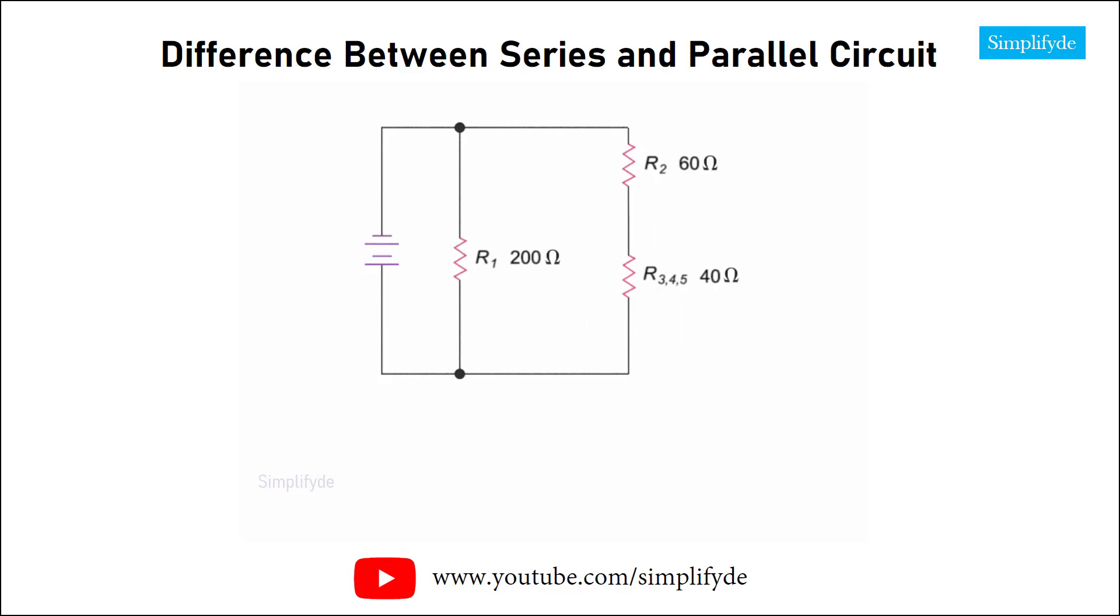Now, we have further reduced the circuit to two resistors in series, R2, and the equivalent resistance of the R3, R4, and R5 resistors. Again, because we have resistors in series, we can simply add the 60 ohms to the 40 ohms to get a combined value of 100 ohms.